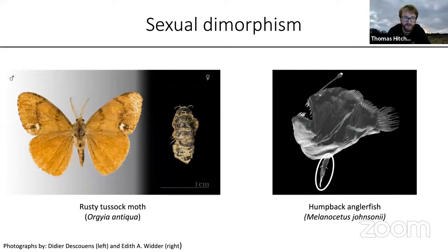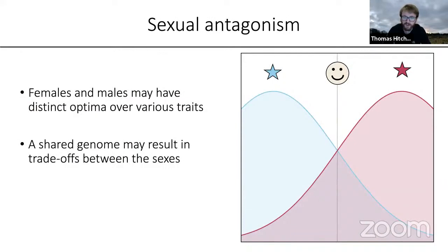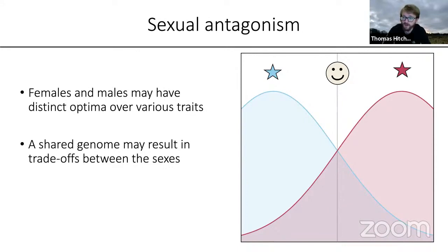Males and females have distinct reproductive strategies, which may lead them to have distinct optima over a range of traits — whether morphological, physiological, behavioral, or otherwise. Two particularly striking examples are the rusty tussock moth, with its slender-winged males and plumper wingless females, and the humpback anglerfish, which displays extreme sexual dimorphism in size — the main fish you can see is a female, with the much smaller parasitic dwarf male ringed here.